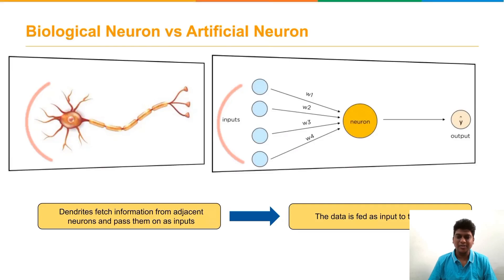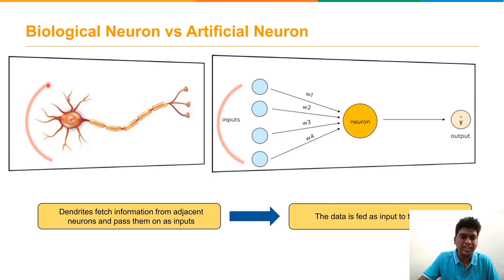Welcome. Today we will discuss artificial neural networks in deep learning algorithms. We begin by comparing the biological neuron with the artificial neuron present in the deep learning concept.